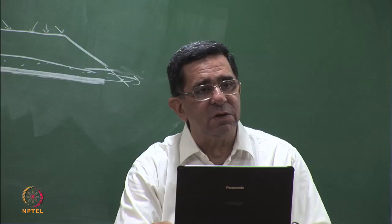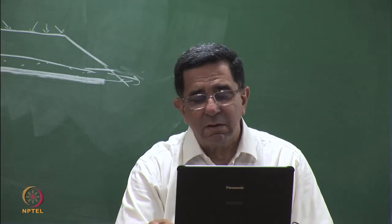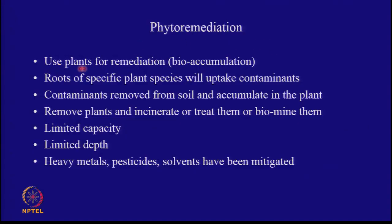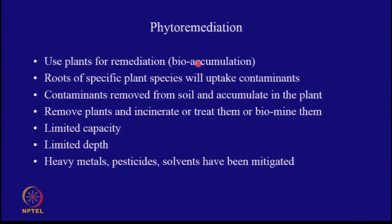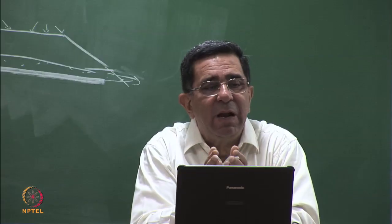A subset of bioremediation is phytoremediation — using plants for remediation. The concept is bioaccumulation. Roots of specific plant species uptake the whole solution; as roots uptake the water, contaminants also enter the root and get deposited in the plant tissues. Contaminants are removed from the soil and accumulate in the plant; water evaporates and salts accumulate. In the end you dig up the plants and incinerate them — the ash will have the contaminant in a very small volume, which you can stabilize and put in a hazardous waste landfill.